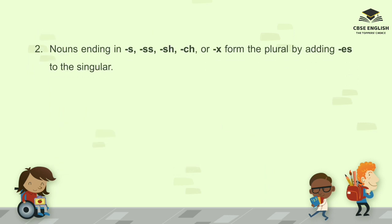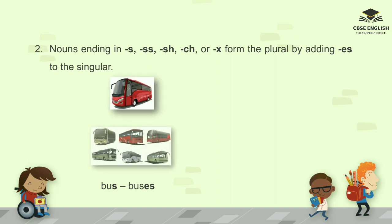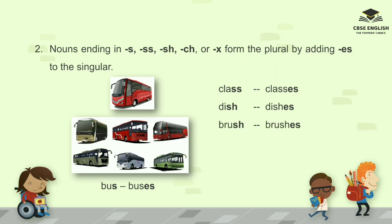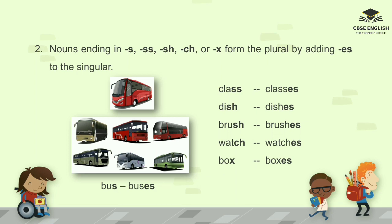Number two: nouns ending in S, SS, SH, CH, or X form the plural by adding ES to the singular. For example: bus, buses; class, classes; dish, dishes; brush, brushes; watch, watches; box, boxes.